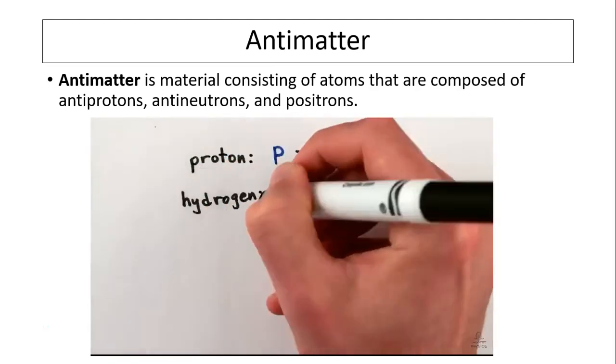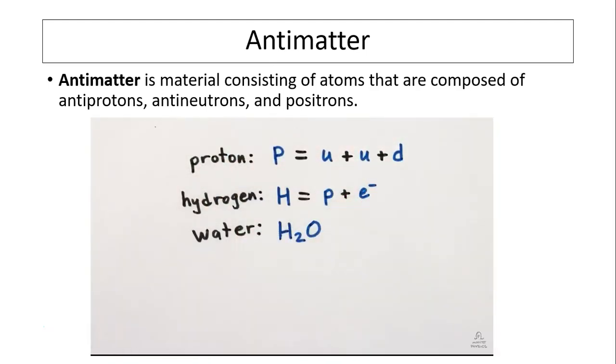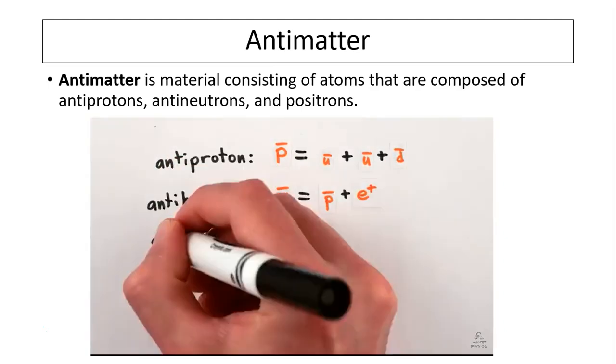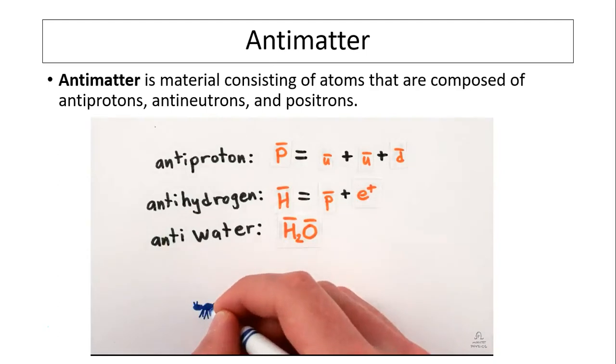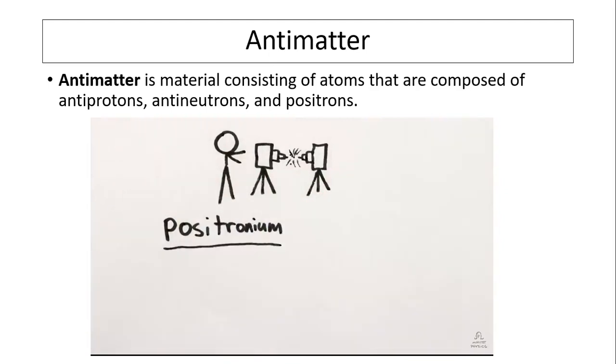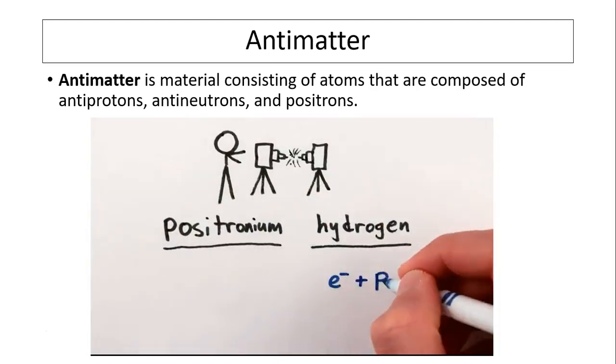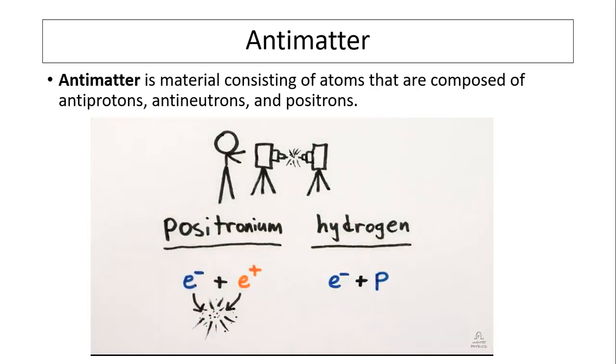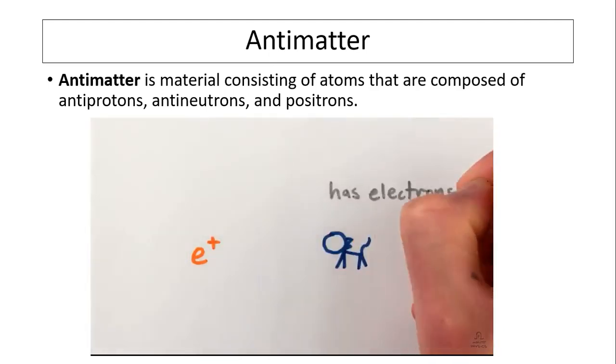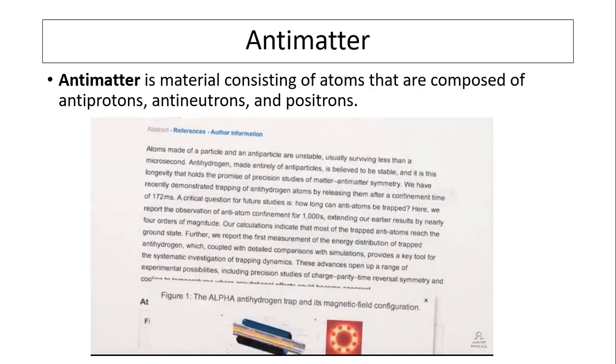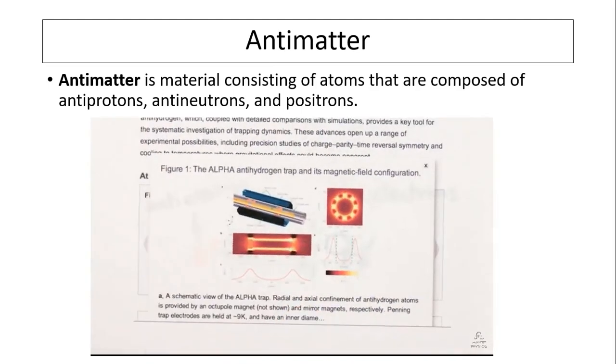Since antimatter particles are essentially identical to regular matter, other than the opposite charge, they can combine together in essentially identical ways to form anti-protons, anti-atoms, anti-molecules, and in principle, anything from anti-ants to antimatter horns. We can also make the really cool positronium atom. It's like hydrogen, except instead of an electron orbiting a proton, it's an electron orbiting a positron, until they annihilate each other in under a nanosecond.